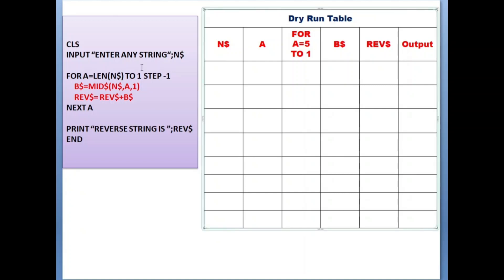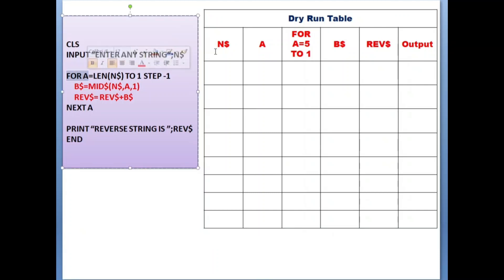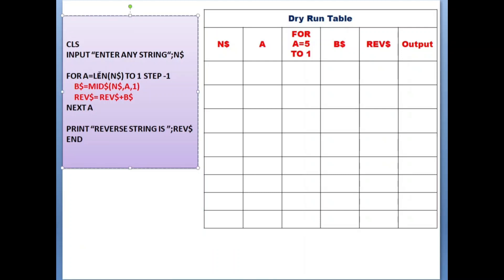This is the trace table, and this is the program which we have already written here. The first thing you need to do in the trace table is write the variable names used in the program. In the first line you can see the N$ variable is used, so I'm writing N$ here. After that in the loop we are using variable A, so I'm writing A here. After that we have the loop condition which might be true or false.